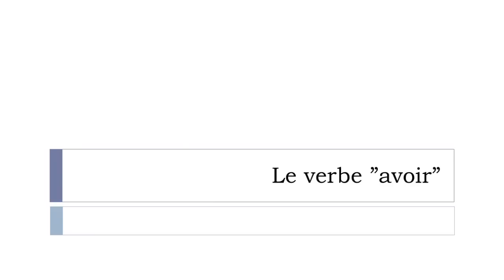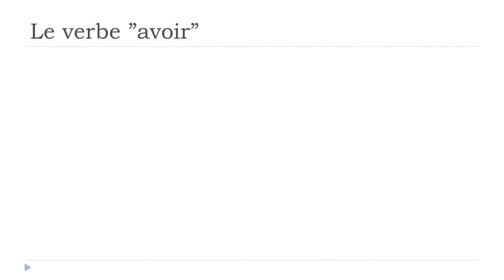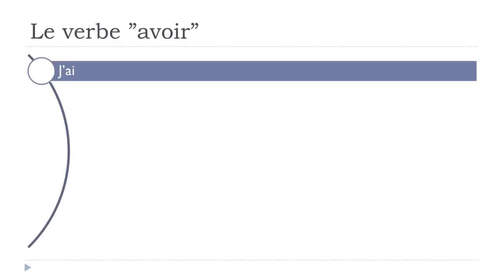Avoir means 'to have.' And for the same reason as 'to be,' it's really useful and really used. So you should definitely know this verbe avoir by heart if you want to master the French language. So let's see the verbe avoir and the different forms.